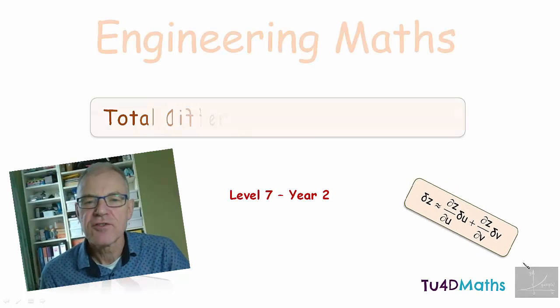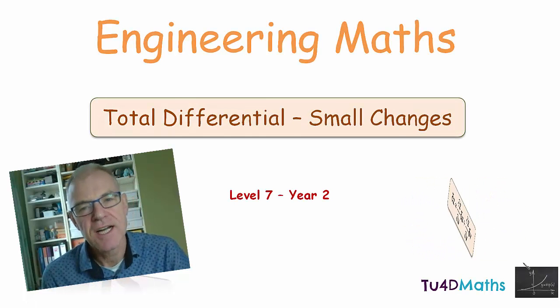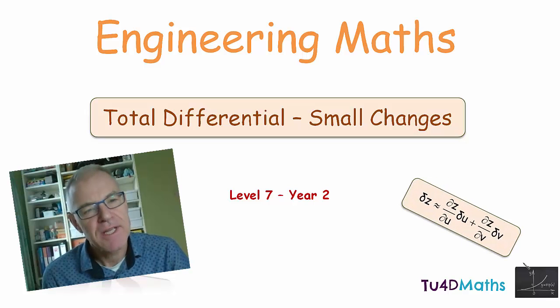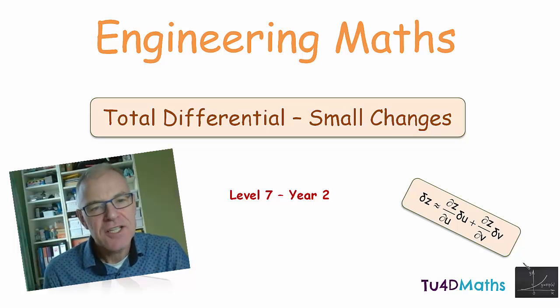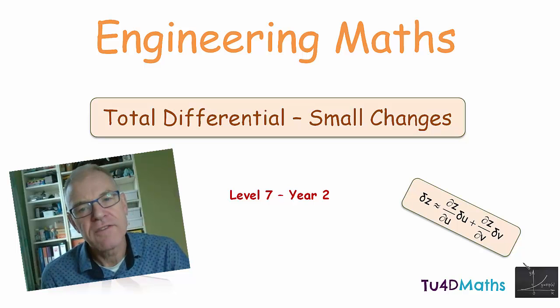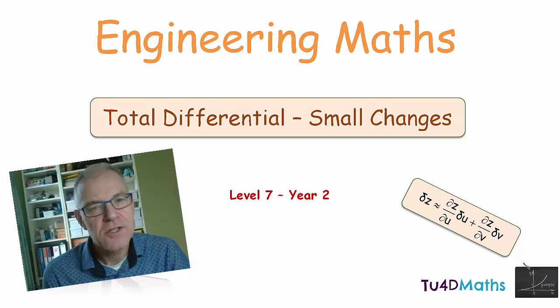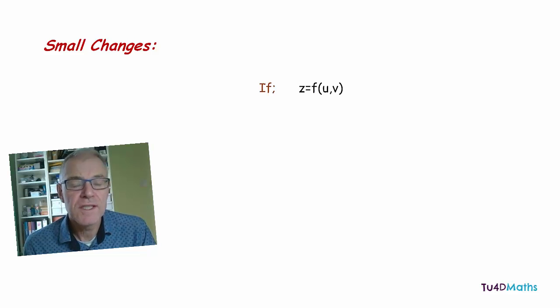Previously we looked at partial differentiation where only one variable changed at a time and the other variable was kept constant. Now in reality all variables may be changing at the same time. In this section we look at the change or the error in some quantity when there are small changes in all of the variables associated with this quantity. So let's have a look at a situation where we have small changes in the variables associated with some quantity z.